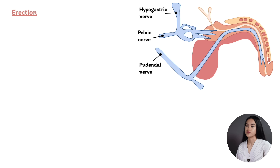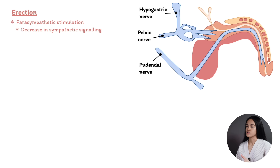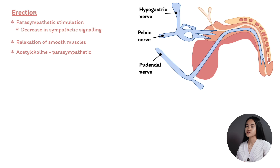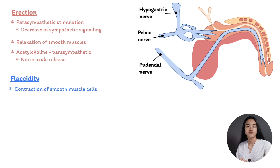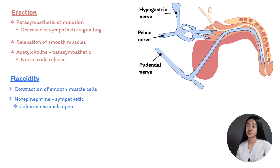To summarize: erection results from parasympathetic stimulation and inhibition of sympathetic signaling. When smooth muscle cells relax, erection occurs — acetylcholine mediates parasympathetic signaling, facilitates nitric oxide release, leading to reactions that close ion channels and relax smooth muscles. When smooth muscle cells contract, flaccidity results. Norepinephrine mediates sympathetic nerve signaling, while endothelin and prostaglandin mediate endothelium signaling, opening calcium channels, leading to smooth muscle contraction — the flaccid state.